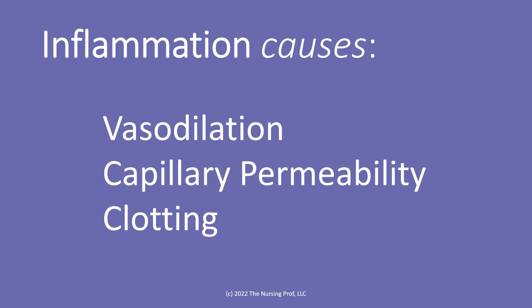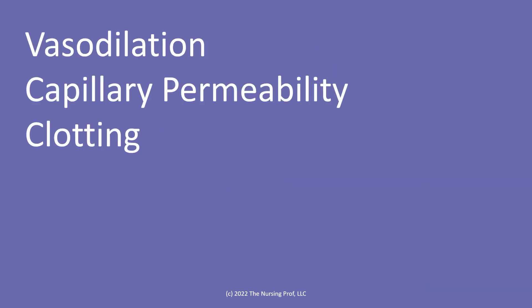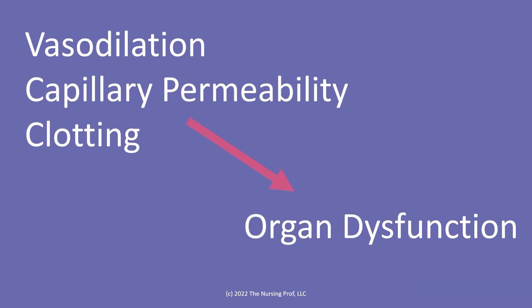So even though we've increased the amount of oxygen-carrying capability of that patient's blood, we've also stimulated an inflammatory response. Unfortunately, that vasodilation, capillary permeability, and clotting can then lead to the patient developing organ dysfunction. This would be a major consequence of transfusing our patient. In some cases, obviously, we do need to transfuse patients because their hemoglobin level is so low, but we do want to use it with caution because this can be the end result.